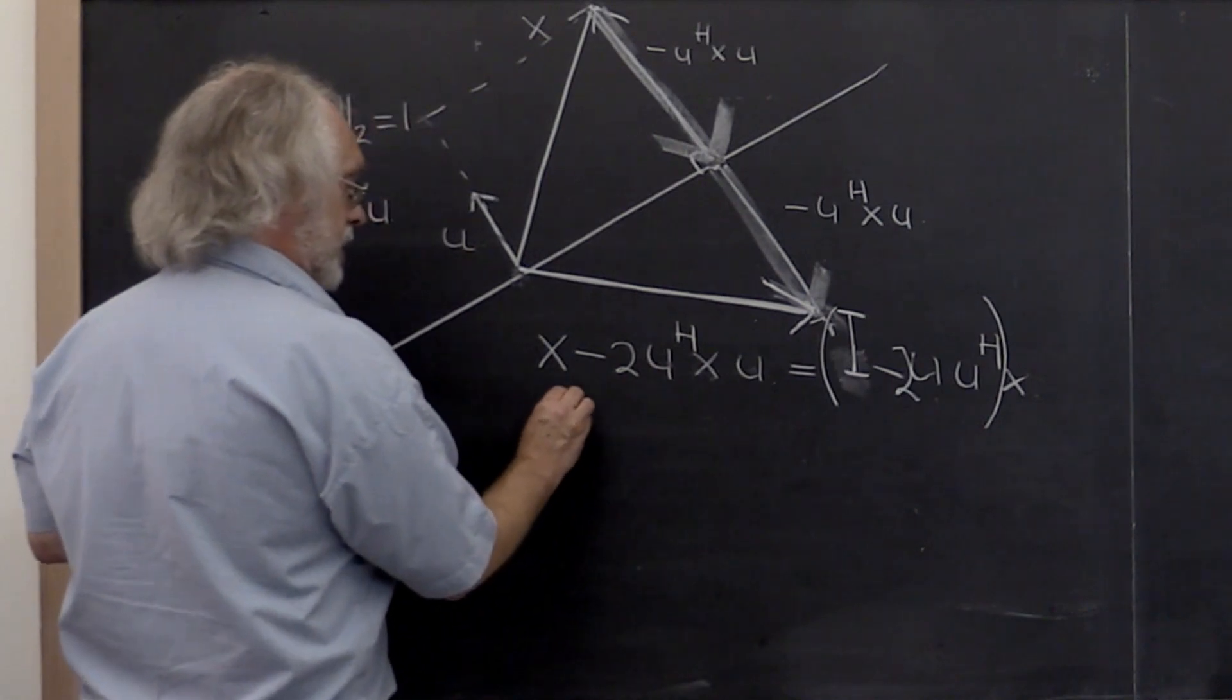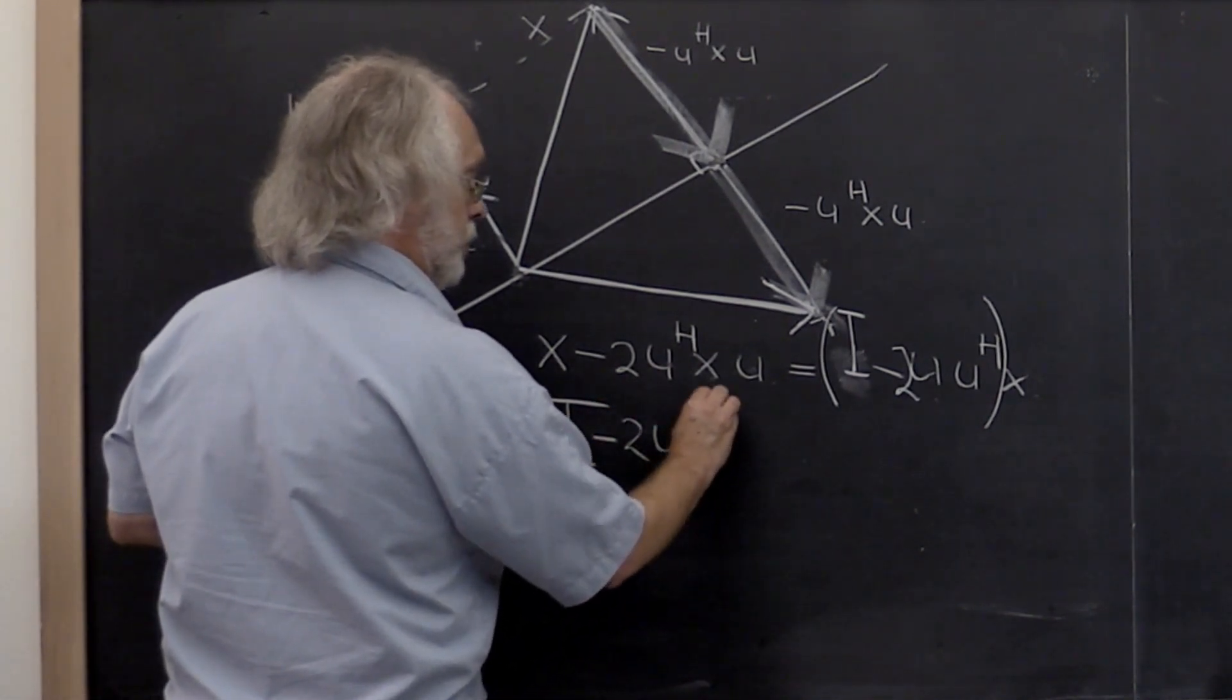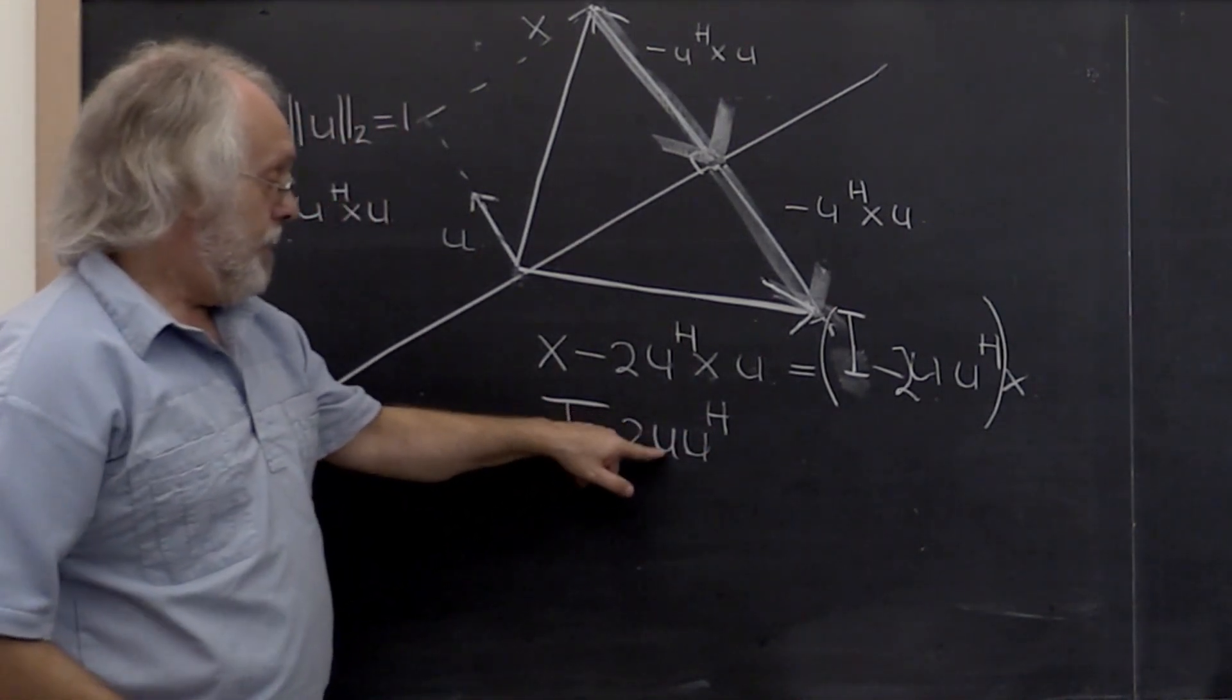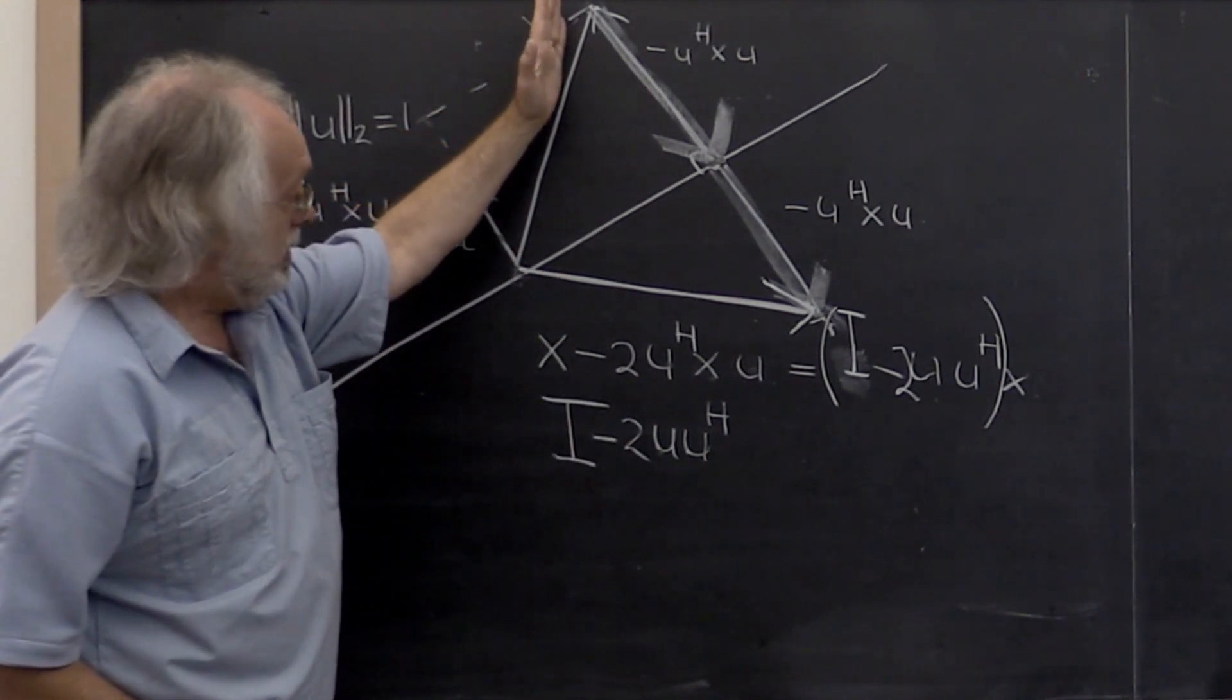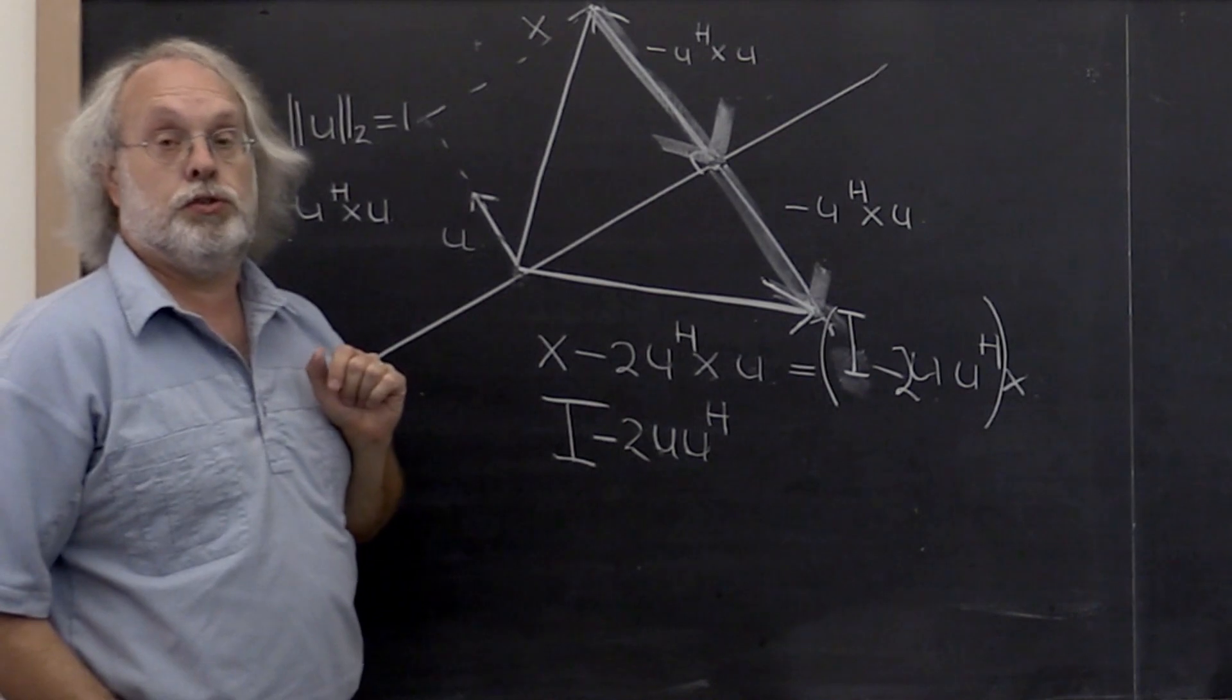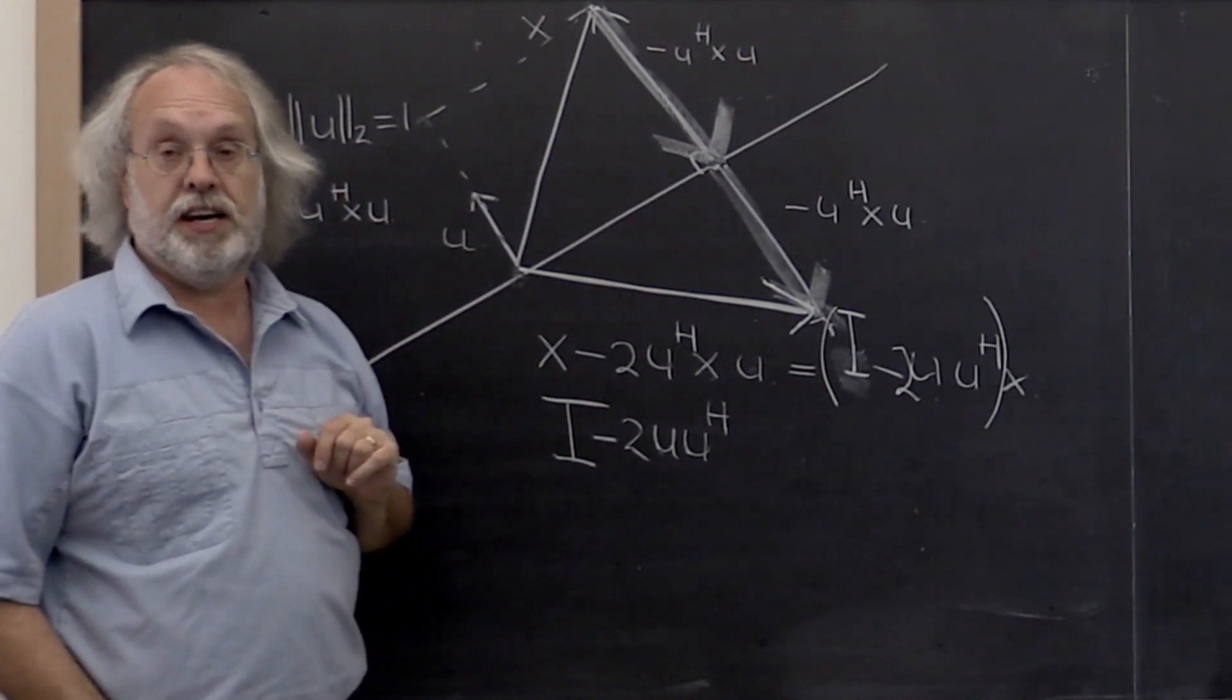So the matrix I minus 2 u u Hermitian transpose is the matrix that captures the transformation that mirrors x with respect to the subspace orthogonal to vector u, where vector u must have size 1.